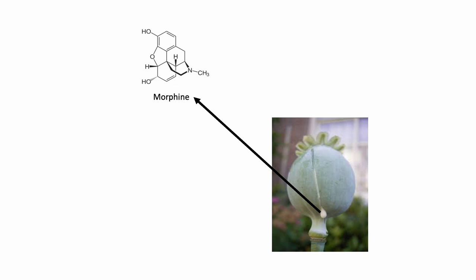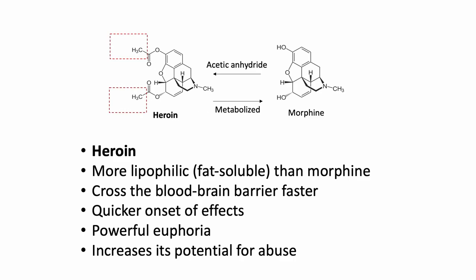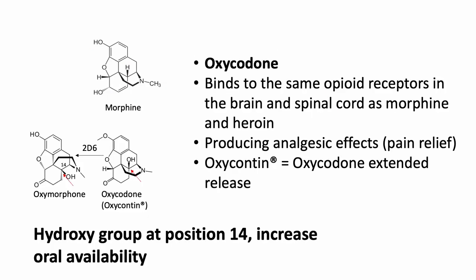Morphine is one of the most well-known and oldest natural opioids, derived directly from the opium poppy plant — more precisely from the sap of the seed capsule — and is often used for severe pain relief. Heroin is a semi-synthetic opioid derived from morphine, created by modifying morphine through chemical processes. Heroin is more lipophilic, meaning fat-soluble, than morphine, which allows it to cross the blood-brain barrier more rapidly, leading to a quicker onset of effects including powerful euphoria, making it more addictive and prone to abuse.